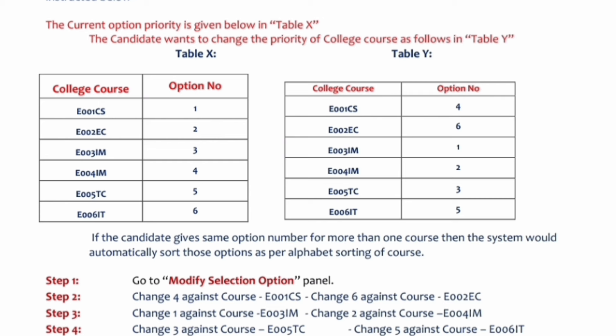For example, suppose you had six options entered (1 through 6). In Table X, E001 CS — UVCE Computer Science — was your first priority. But now you decide BMS College of Engineering IM course should be your first choice instead. In Table Y, go to E003 IM and type '1' in front of it, making BMS IM option number one. Similarly, you can modify all your option entries from the list you created in the mock round.